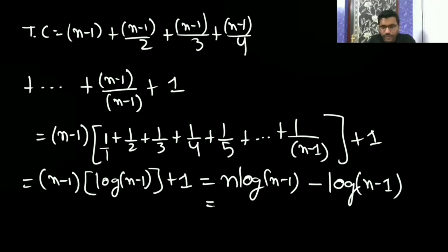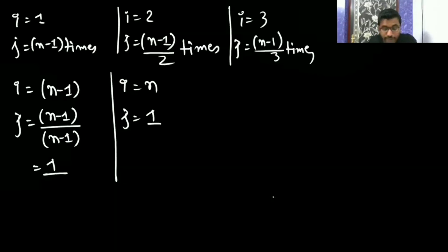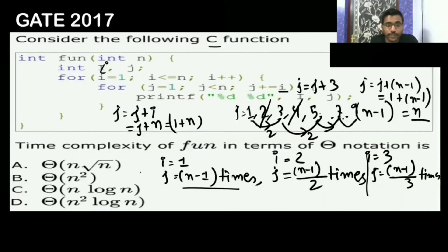So the time complexity is Theta of n log n. Asymptotically you can treat it as n log n, and since option C corresponds to this, C is the correct answer.